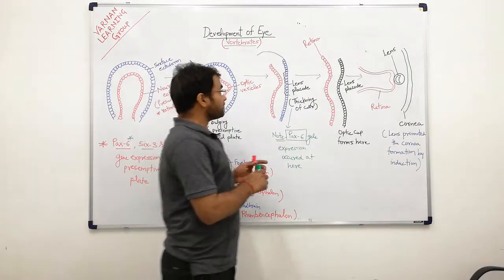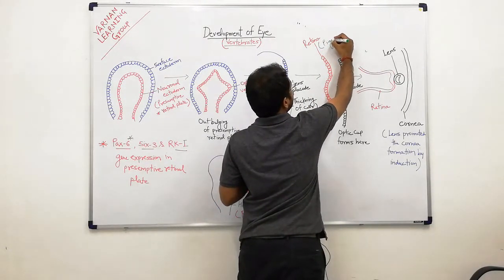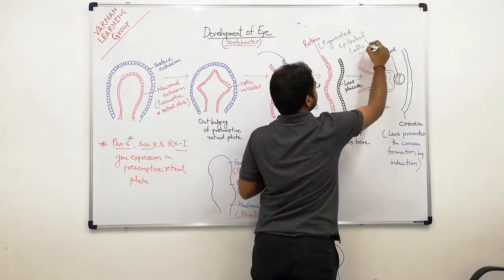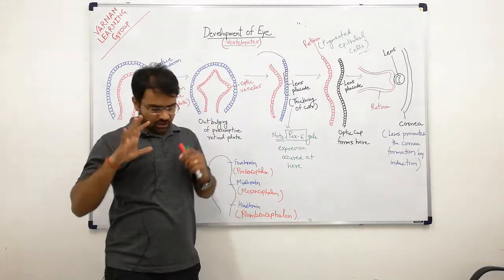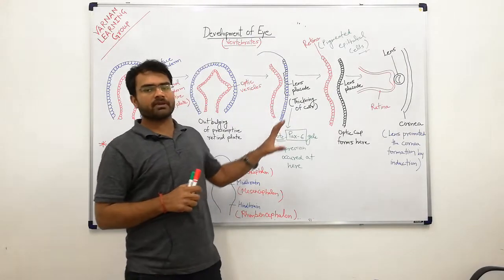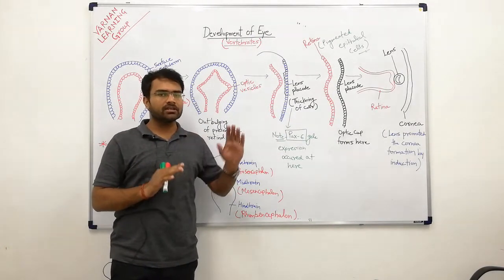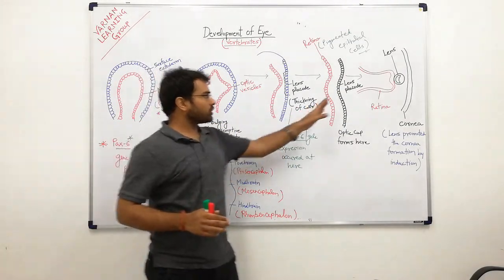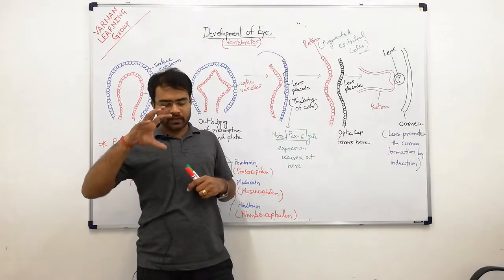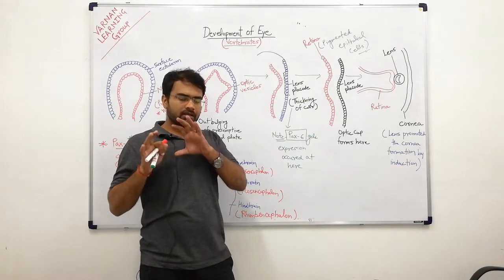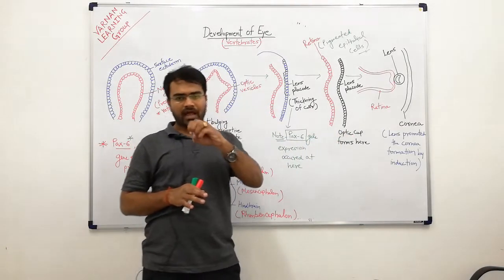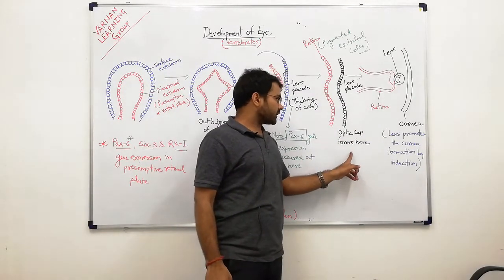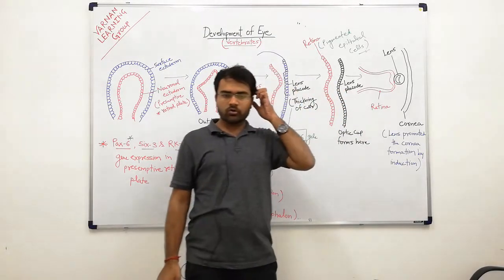The retina includes pigmented epithelial cells. These pigmented epithelial cells are responsible for color formation and image formation. The lens is made from the lens placode in a budding type formation, forming a circular structure. The lens separates as an optic cup forms — the optic cup is the structure that the lens bud separates into.